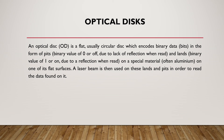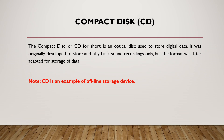An optical disk is a flat, usually circular disk which encodes binary data — bits — in the form of pits, with a binary value of 0 due to lack of reflection when read, and lands on a special material, often aluminium, on one of its surfaces. A laser beam is used on these lands and pits in order to read the data. The compact disc is an optical disk used to store digital data. It was originally developed to store and play back sound recordings only, but the format was later adapted for storage of data. CD is an example of an offline storage device.